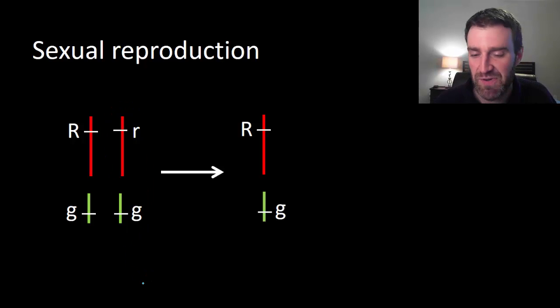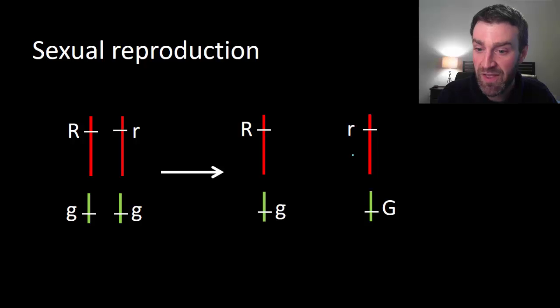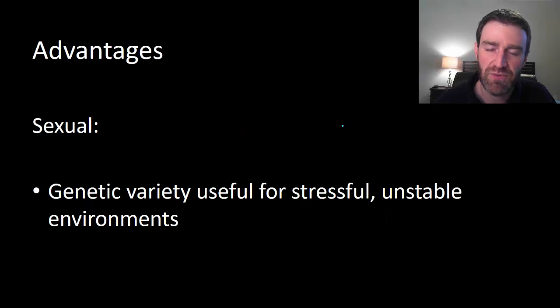And so the other thing about sexual reproduction is that you have a completely separate parent who passes on some complement of its chromosomes as well. And so maybe these two parents pass on these halves of themselves to create a very genetically different offspring. Okay, so the real point of sexual reproduction is that it's really generating a lot of variety in the next generation.